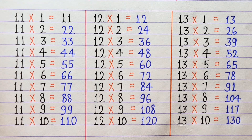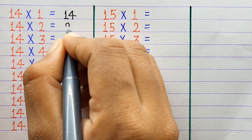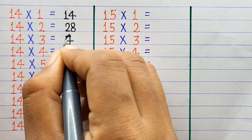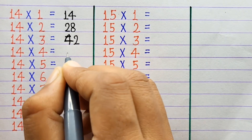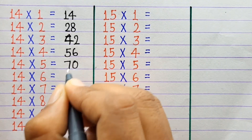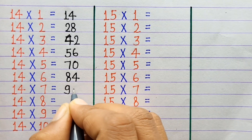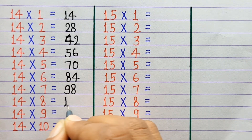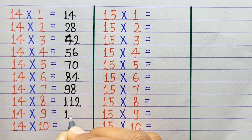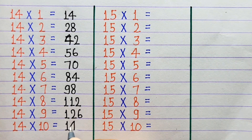14×1=14, 14×2=28, 14×3=42, 14×4=56, 14×5=70, 14×6=84, 14×7=98, 14×8=112, 14×9=126, 14×10=140.